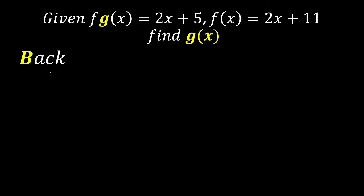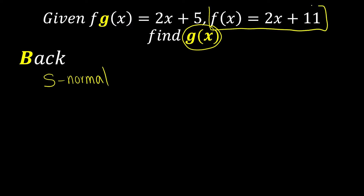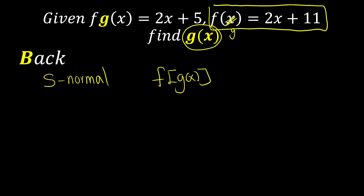The second step, S, means substitute. We substitute whatever we want to find into the normal function. The normal function here is f(x) = 2x plus 11. Since we want to find g(x), we substitute all x with g(x), giving us 2 g(x) plus 11.